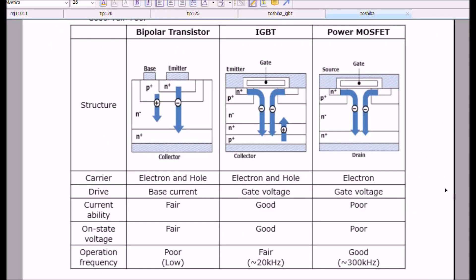Here is the graphic that I used in my other video on MOSFETs and electron flow. We are comparing bipolar transistors with insulated gate bipolar transistors and power MOSFETs. I'll cover now the differences between the three.